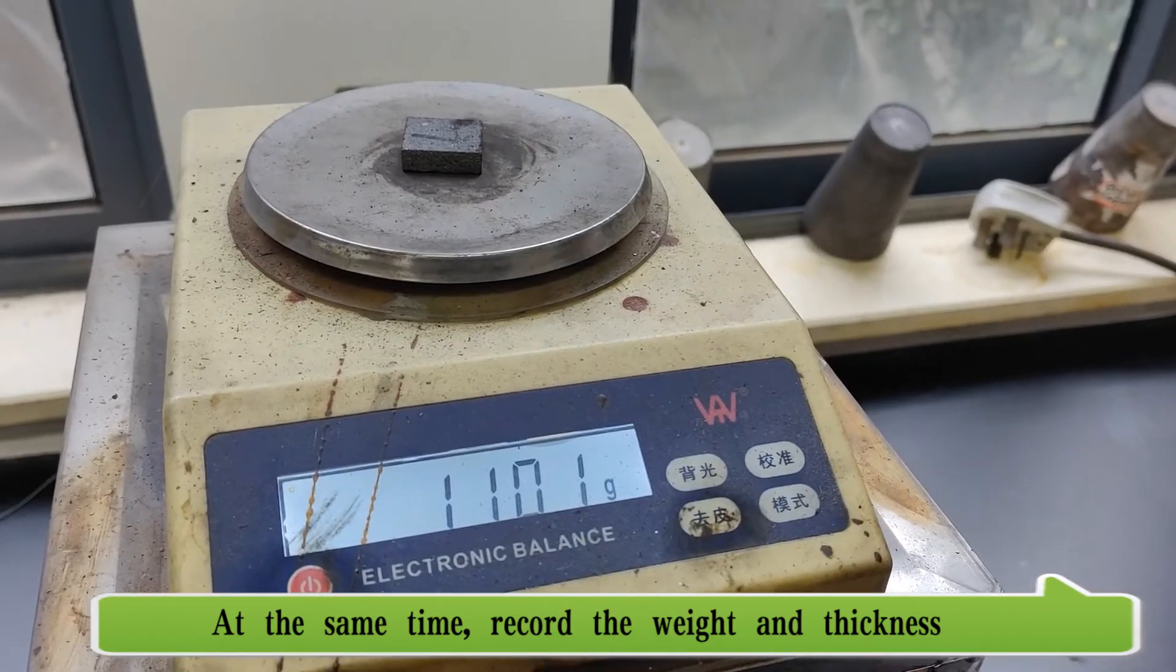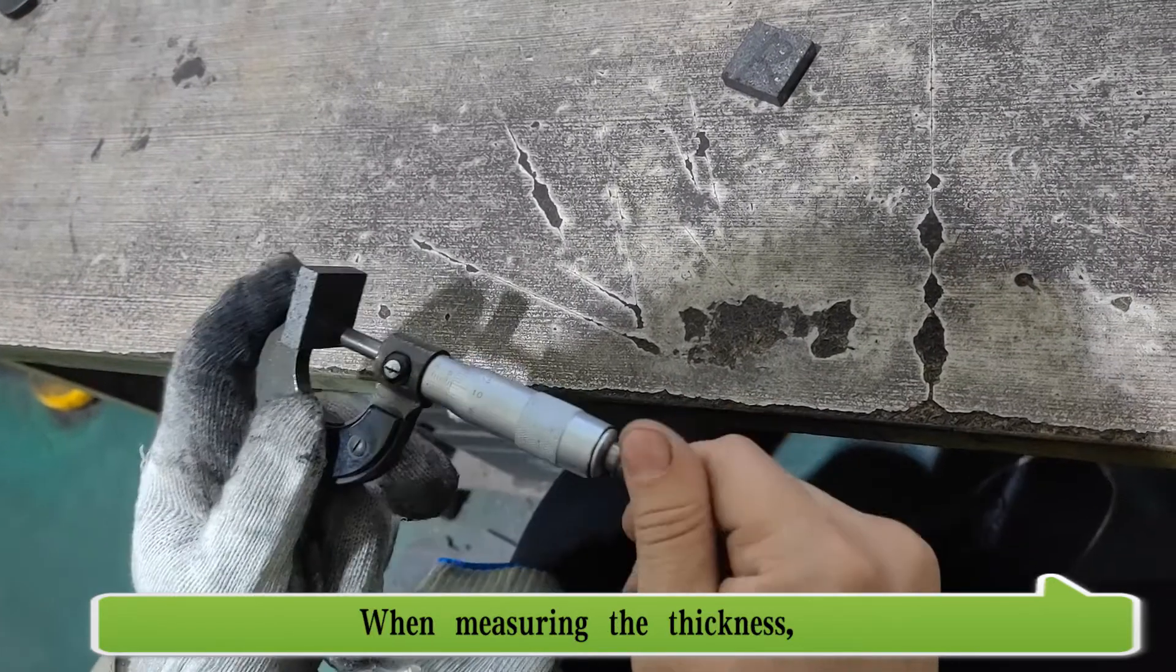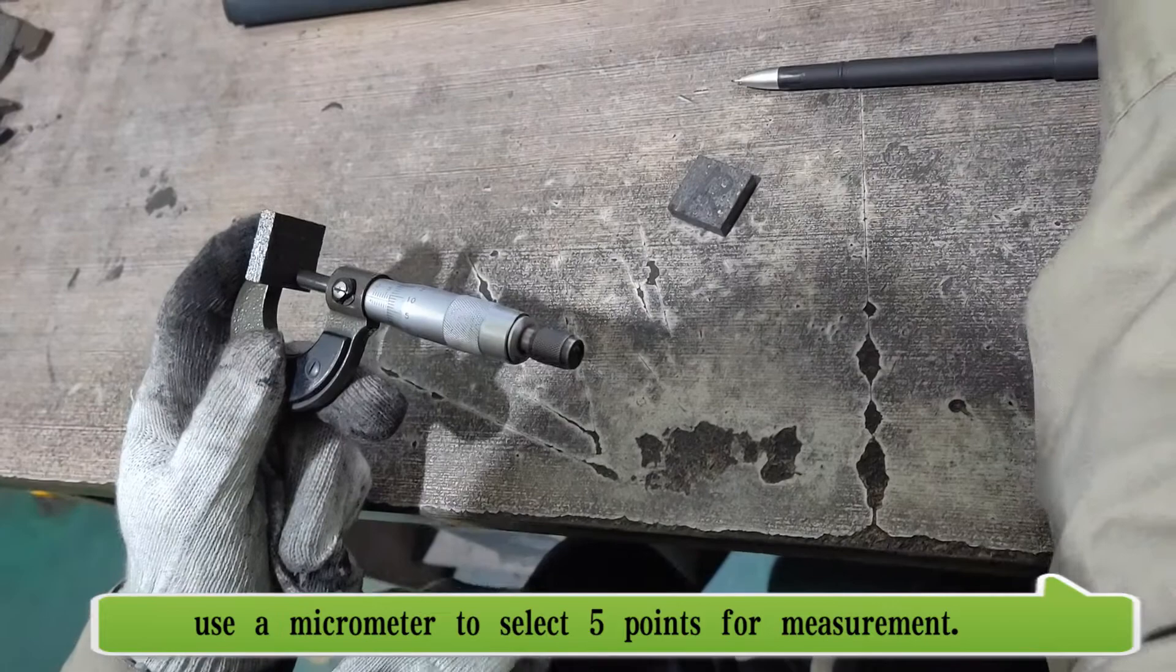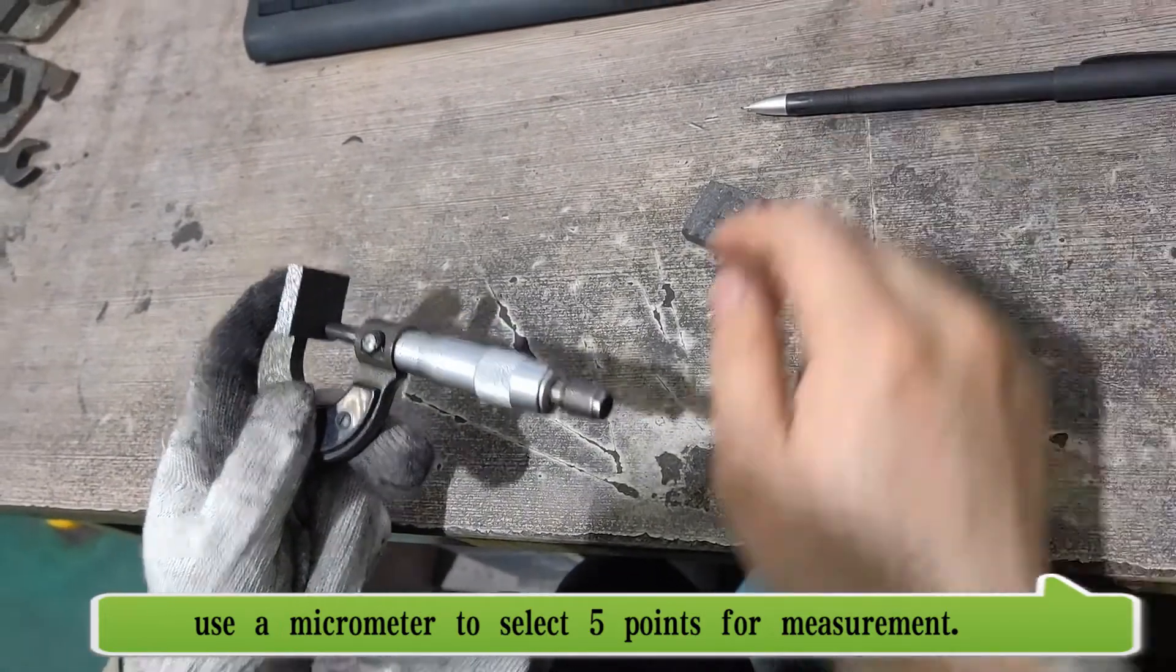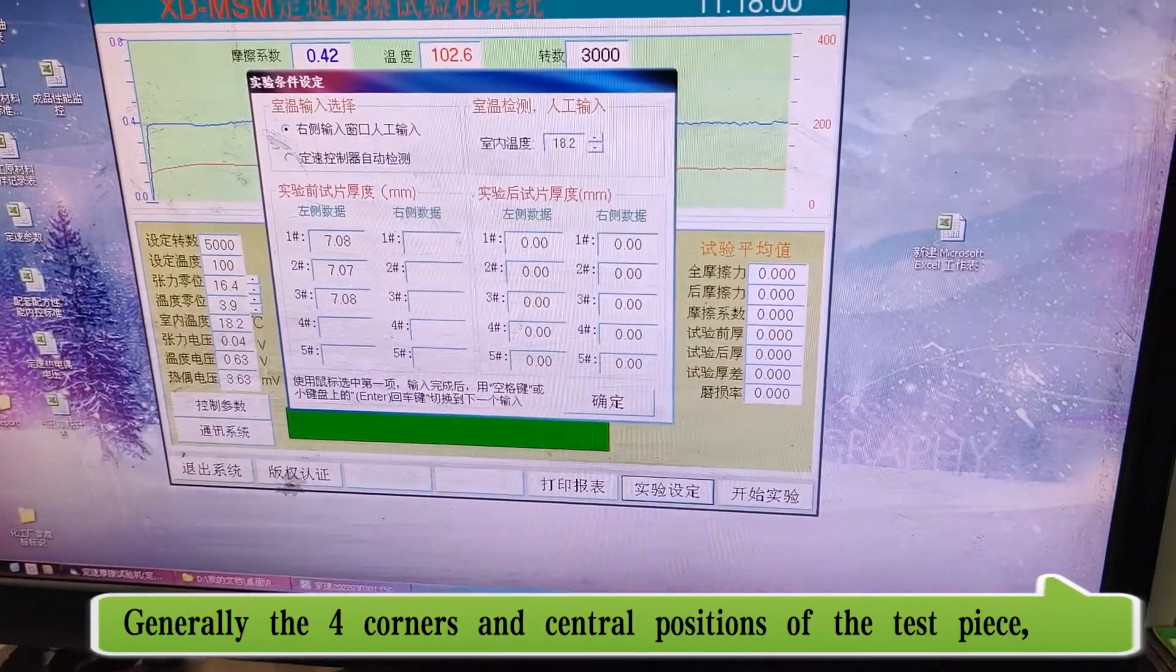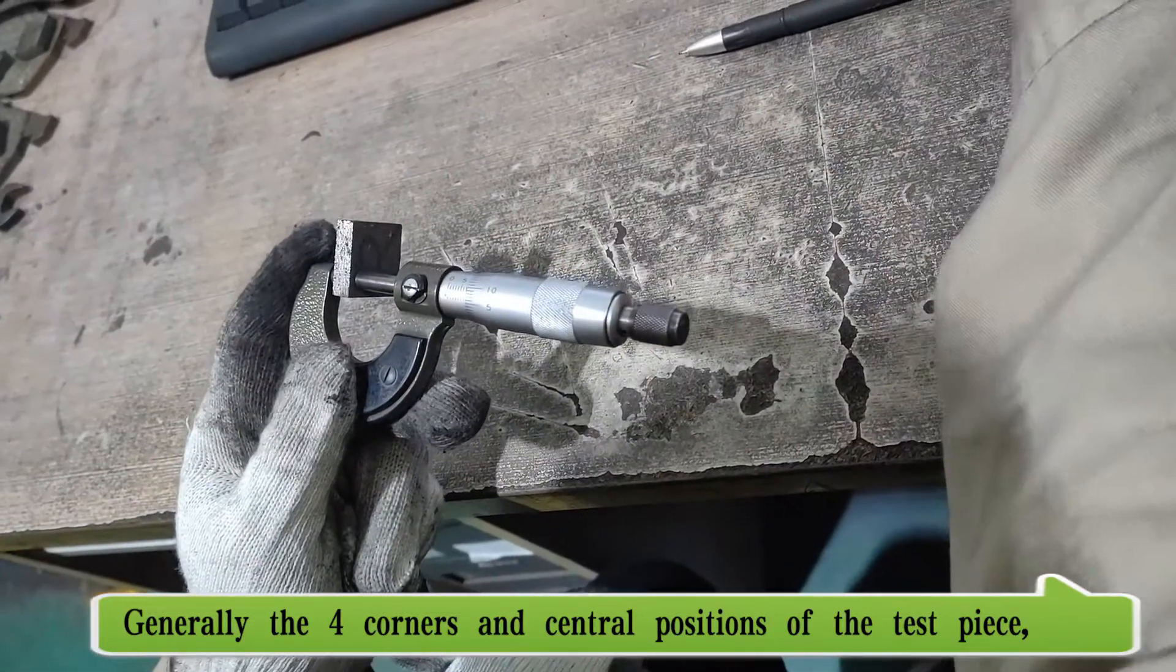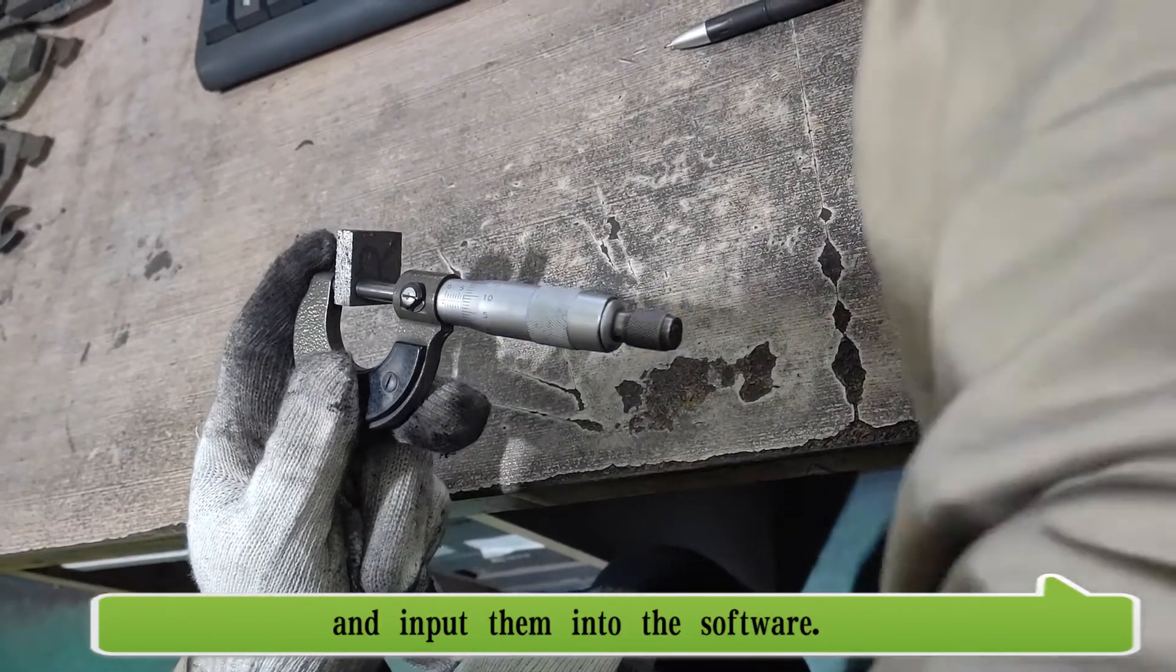At the same time, record the weight and thickness of the sample after cooling. When measuring the thickness, use a micrometer to select five points for measurement, generally the four corners and central positions of the test piece, and input them into the software.